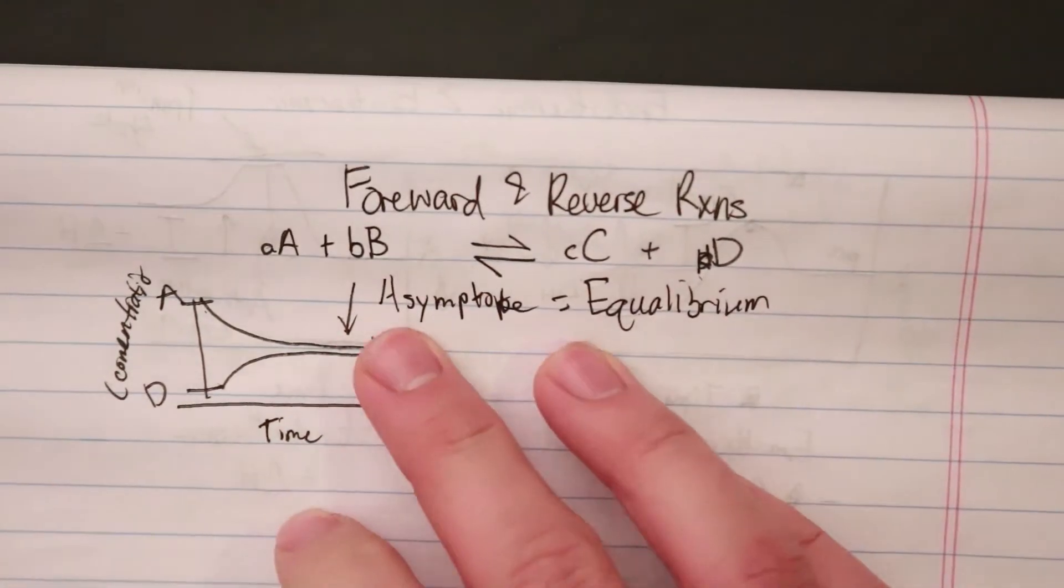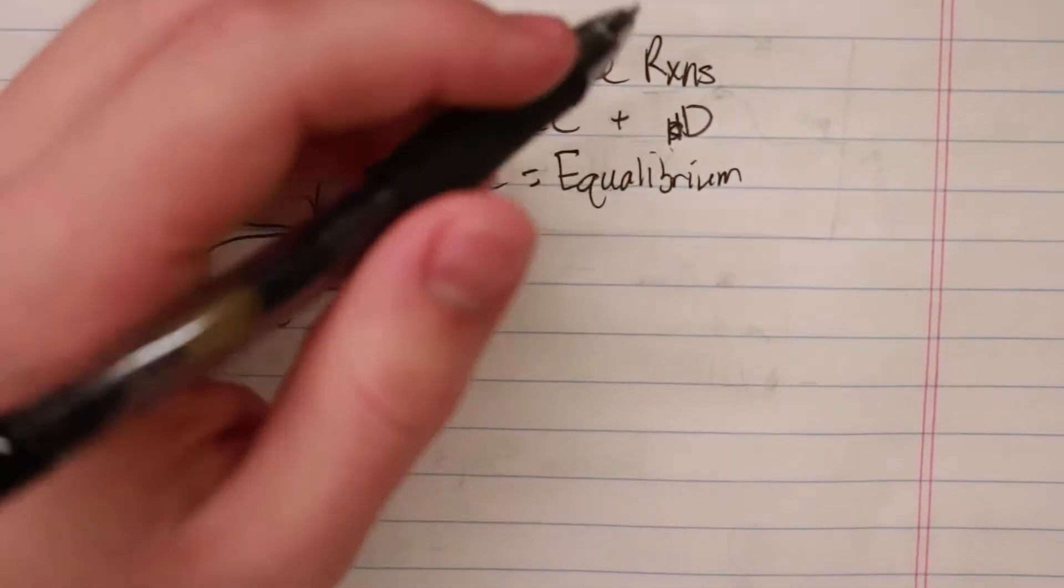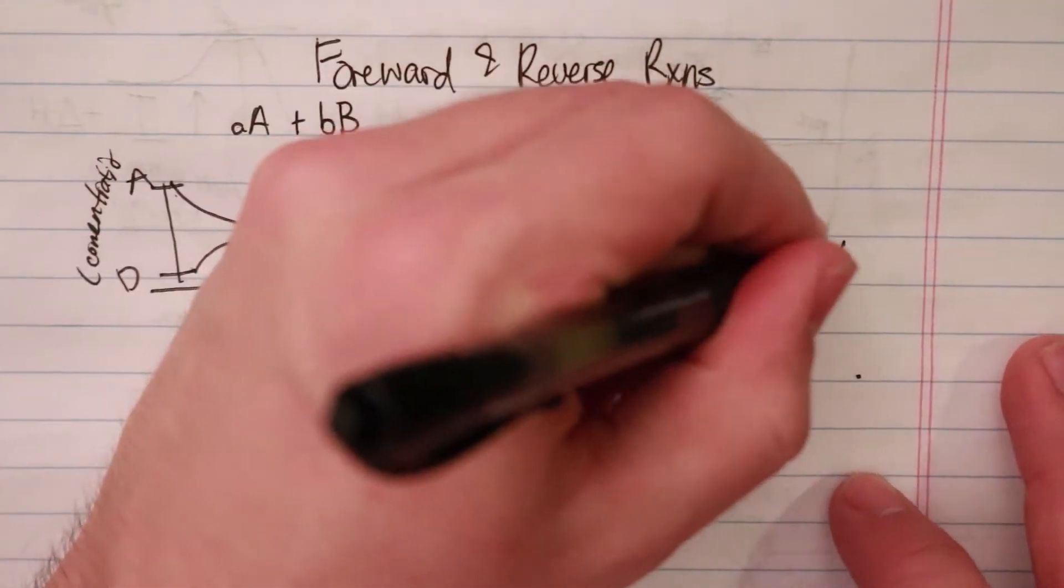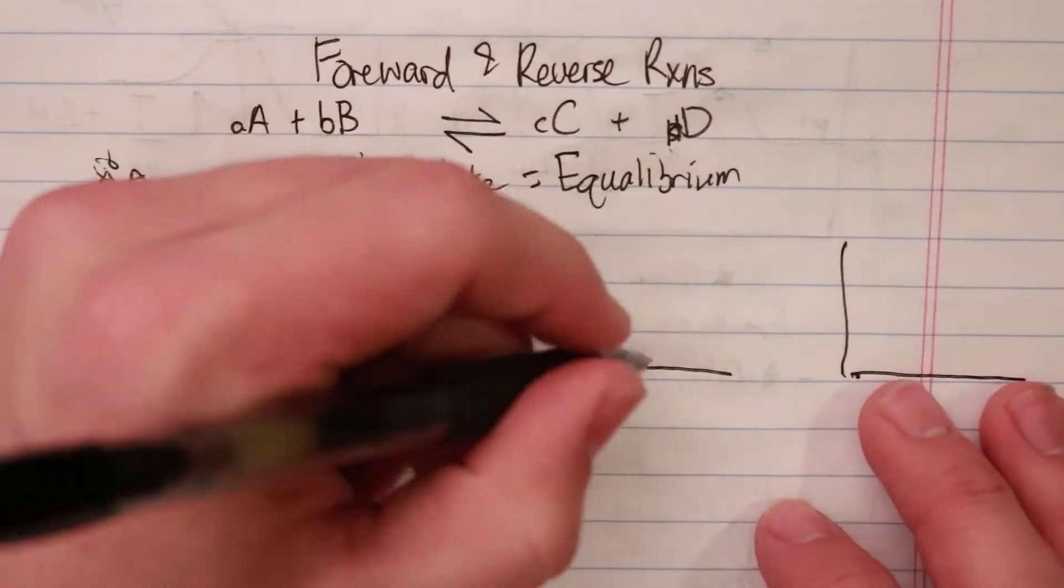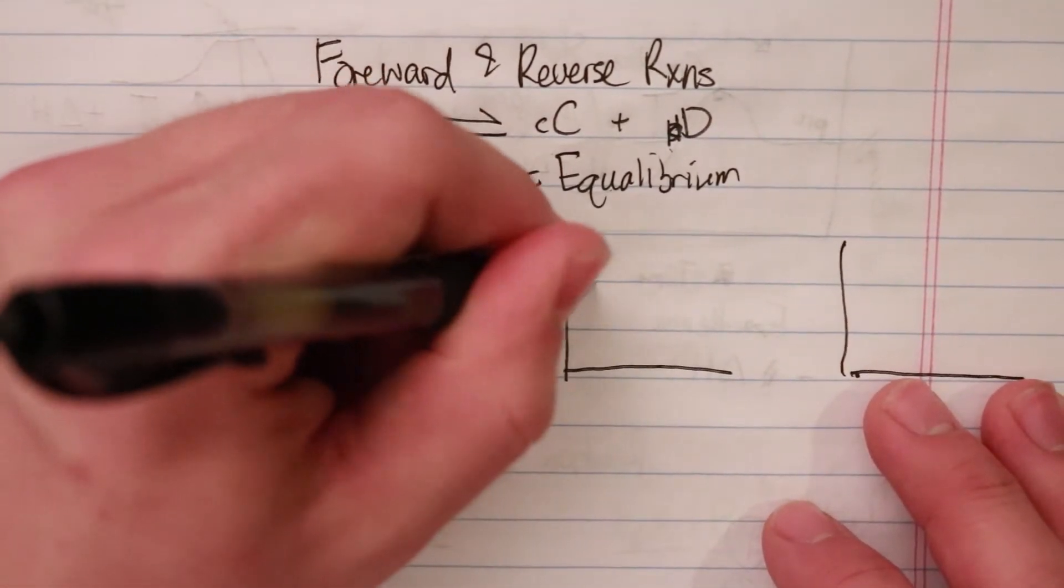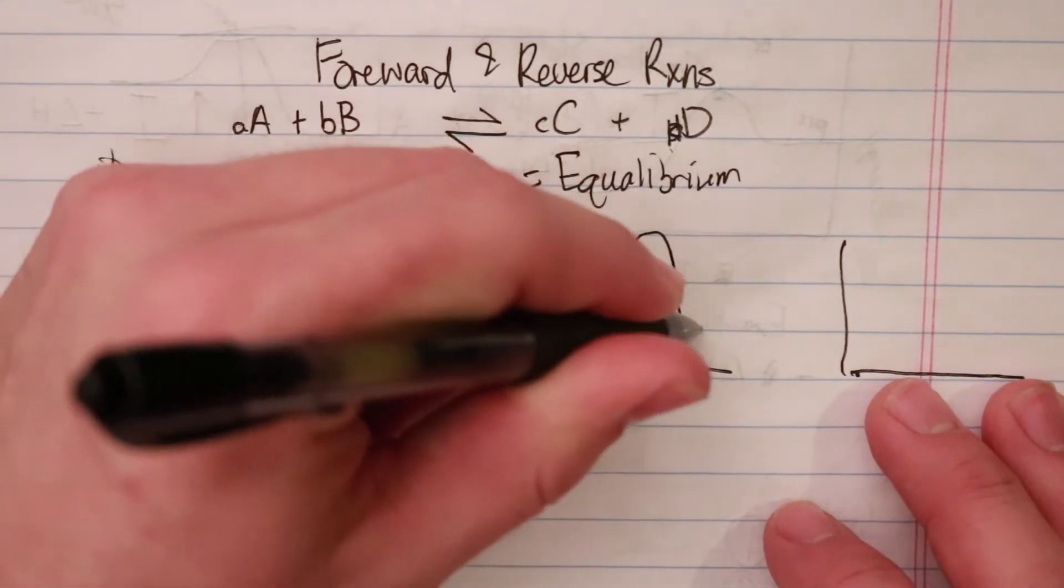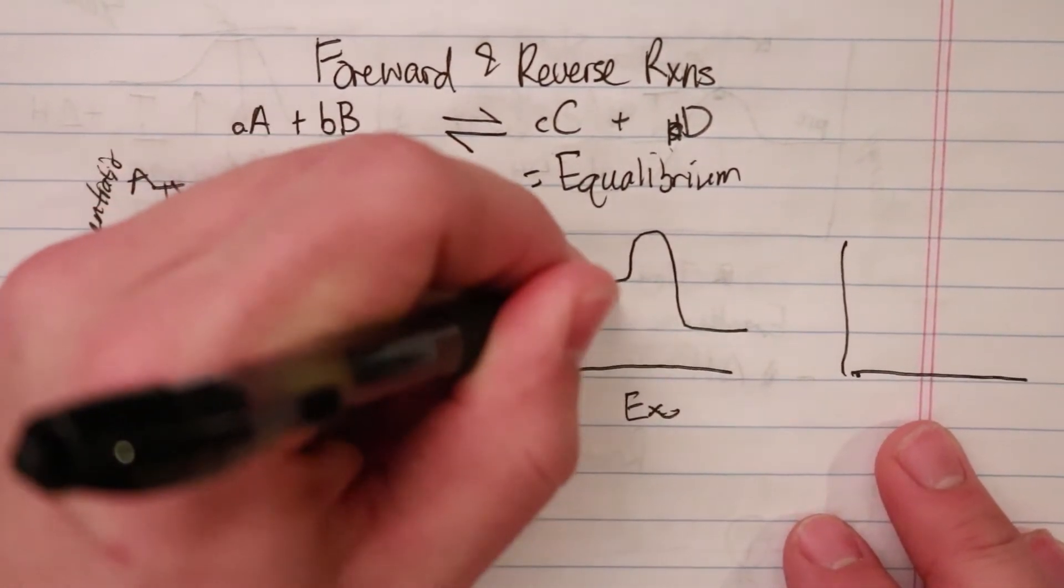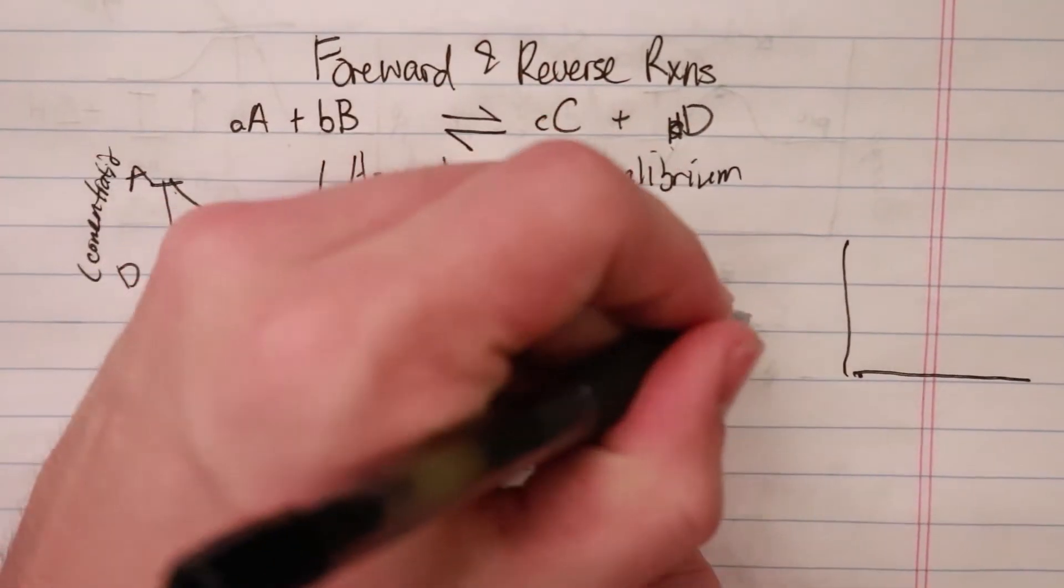That's the general idea of forward and reverse reactions. This also connects to our endothermic and exothermic graphs. Here I'm going to draw a simple reaction. If my reaction goes like this, I have a hill and a hump. This is going to be exothermic because we have a negative delta H.